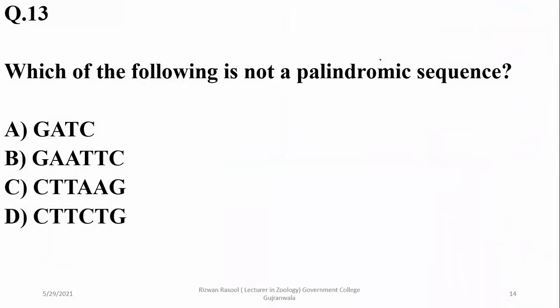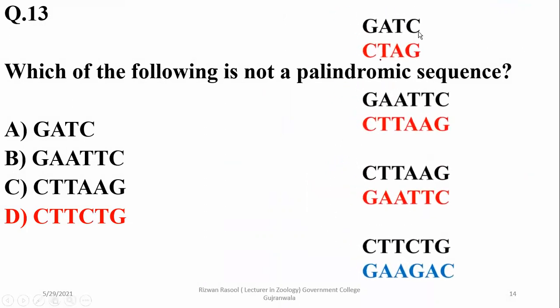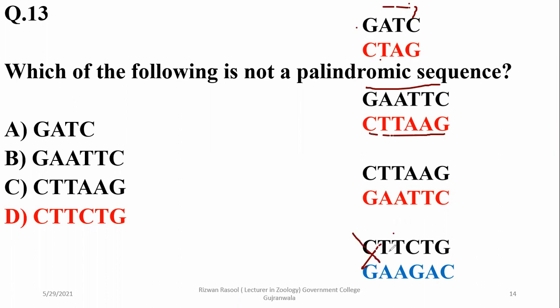Which of the following is not a palindromic sequence? Palindromic sequences are arranged symmetrically in reverse order on a complementary strand. Out of the following, delta is not a palindromic sequence. You can read palindromic sequences in forward and backward direction and they read the same — for example, GATC. But in the case of delta, you will not read the same sequence in forward and reverse order, so delta is the answer.